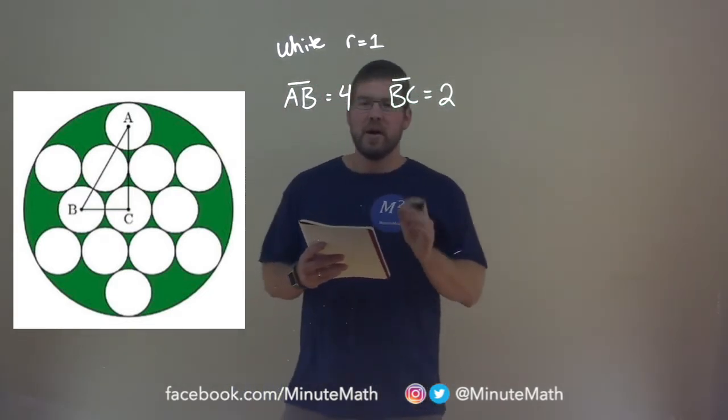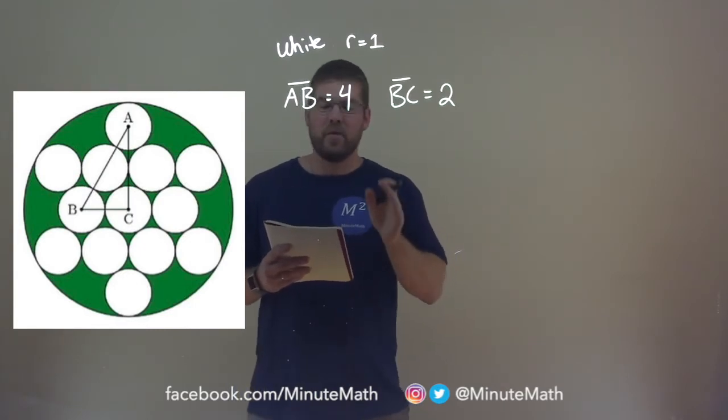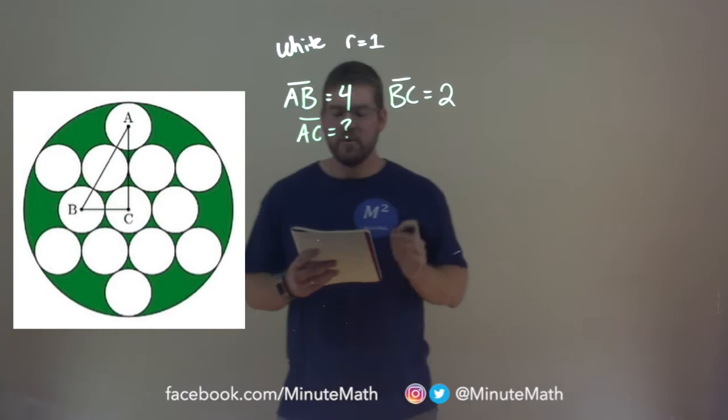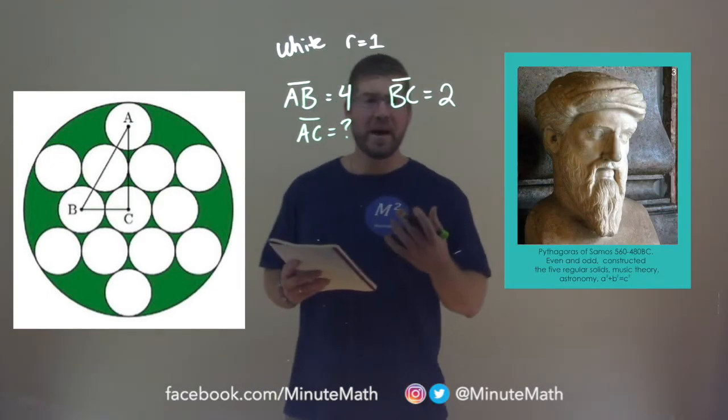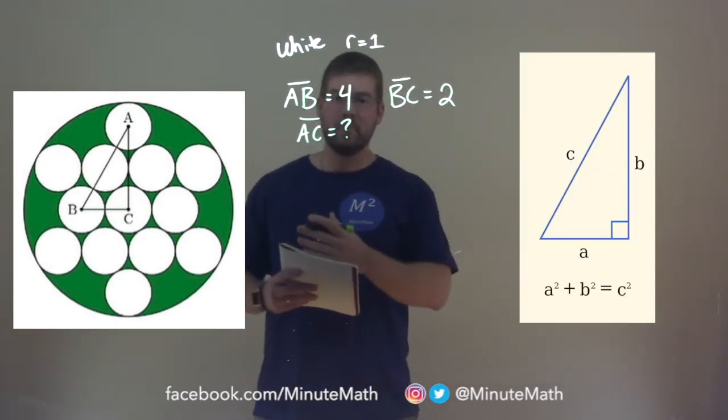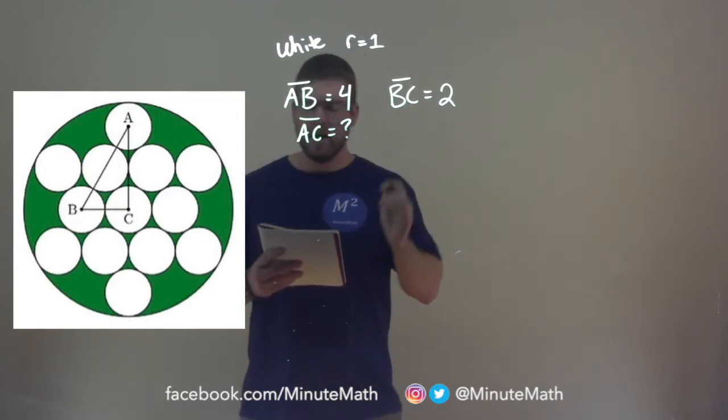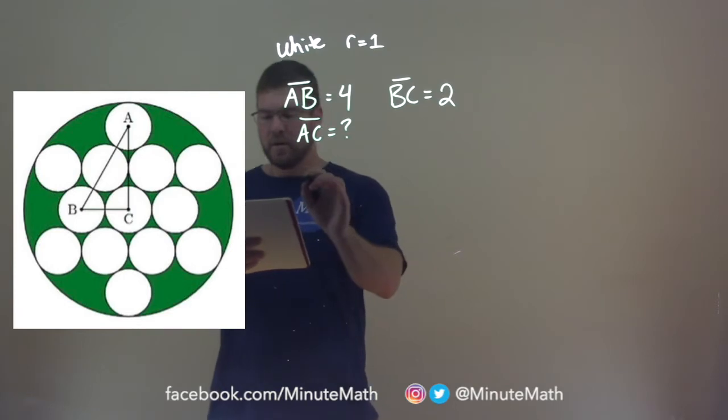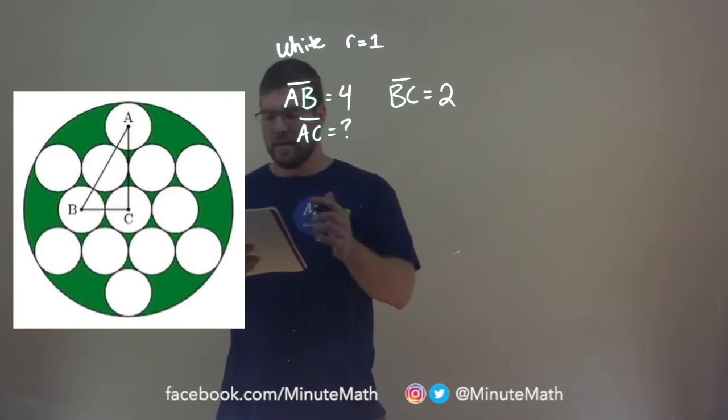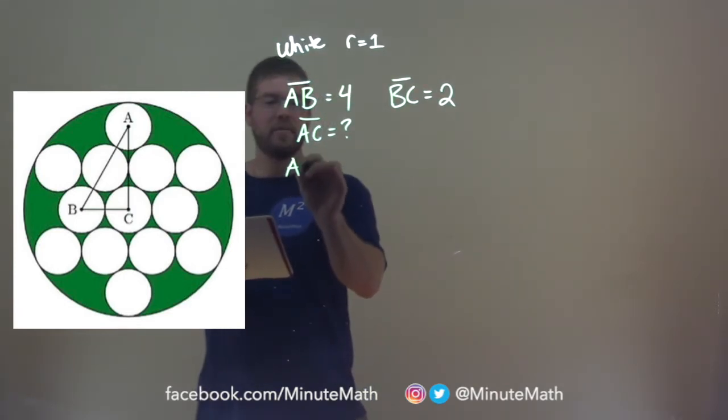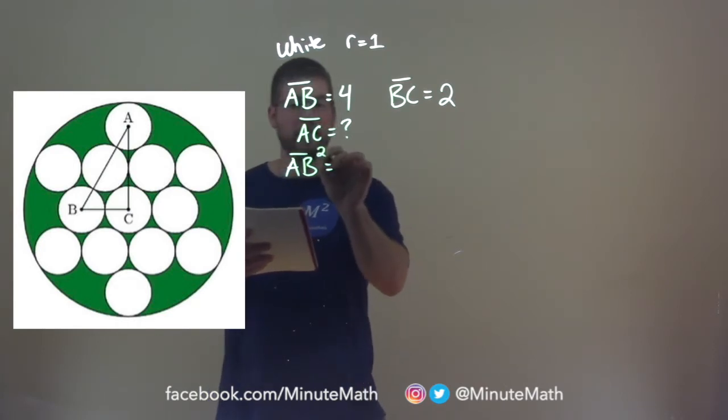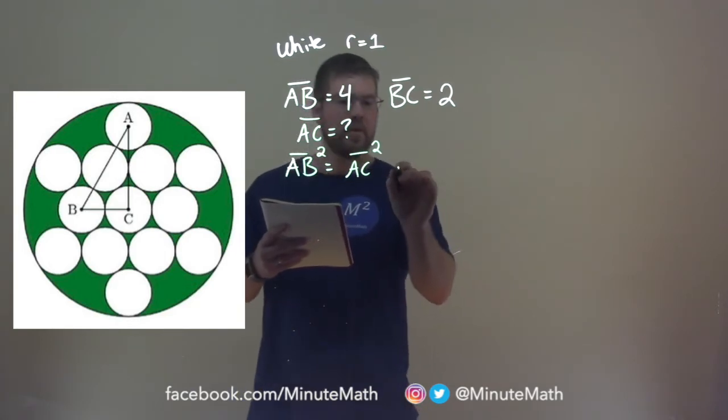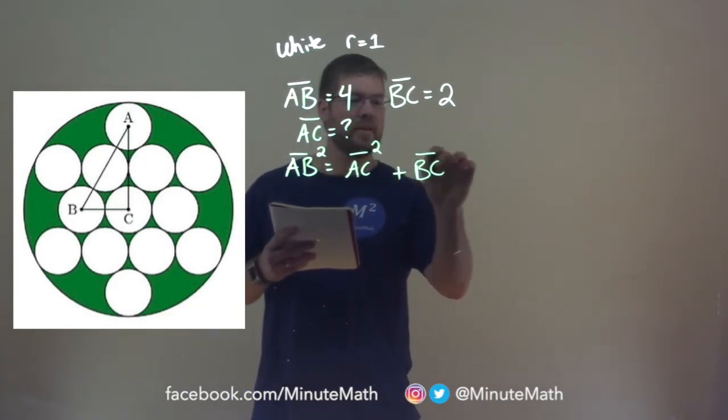Now we also know that the length of BC is equal to two and this is going to be crucial because what we want to find now is the length of AC. We don't know that and we're going to use our good old friend Pythagoras. So Pythagoras tells us that a squared plus b squared equals c squared. So let's apply that with our side lengths. Our c value in that sense is AB. So the length of AB squared is equal to the length of AC squared plus the length of BC squared.